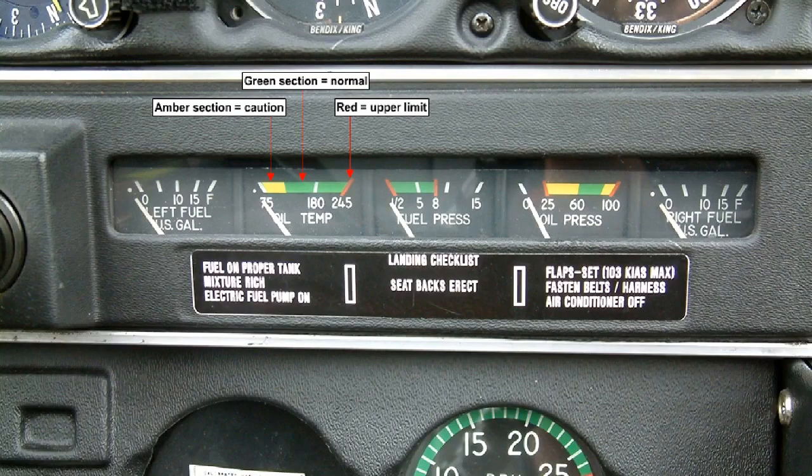Temperature indicators use colored arcs to show their operating range. Green for normal, amber for caution, and red upper or lower limits.